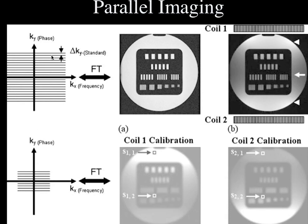If we only acquire the center of k-space, you're only acquiring the differences of contrast and you lose the spatial resolution, which is in the periphery. So you would get blurred images, as we're seeing on the right side. That takes less time to acquire, but we end up with a blurred image, which isn't very good.